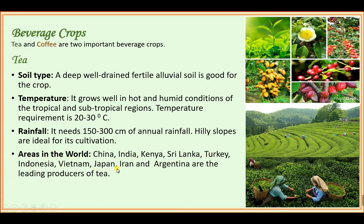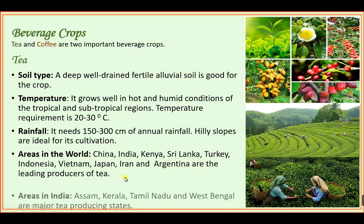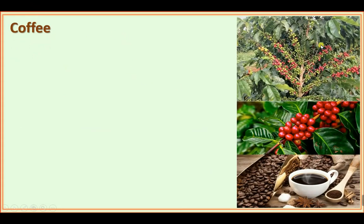Areas in the world: China, India, Kenya, Sri Lanka, Turkey, Indonesia, Vietnam, Japan, Iran, and Argentina are the leading producers of tea. Areas in India: Assam, Kerala, Tamil Nadu, and West Bengal are major tea-producing states.